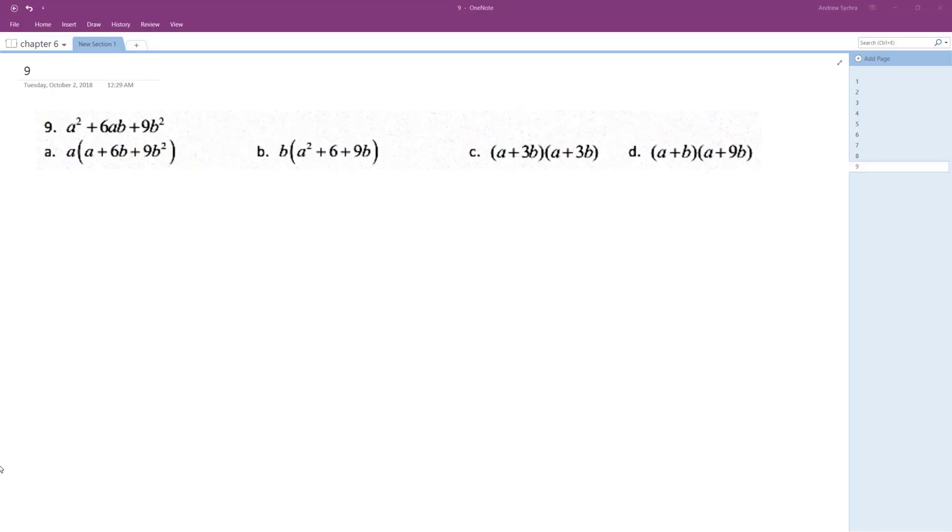Okay, so this may look a little scary at first, but this looks a lot like something. If you just had a² + 6a + 9, which is the same thing as (a + 3)² or (a + 3)(a + 3).